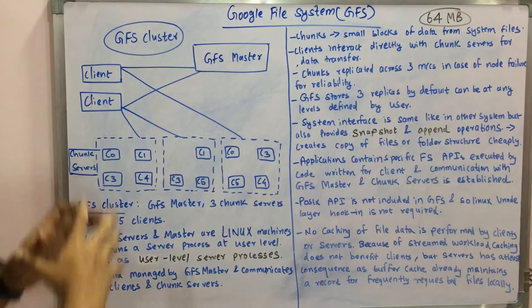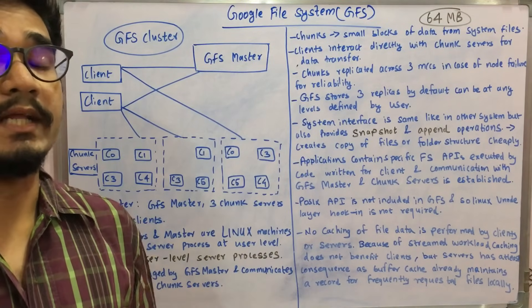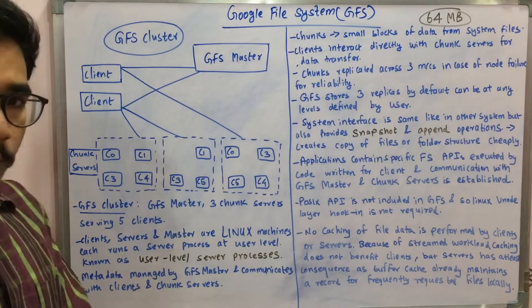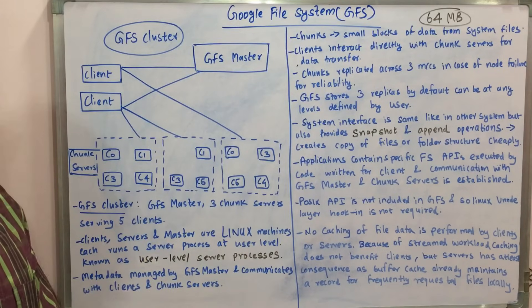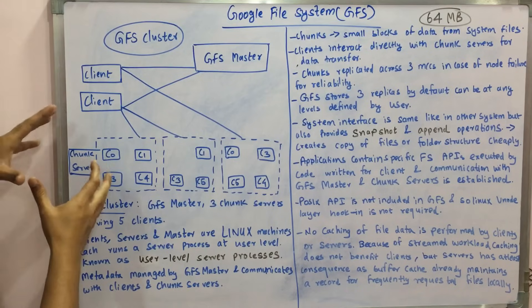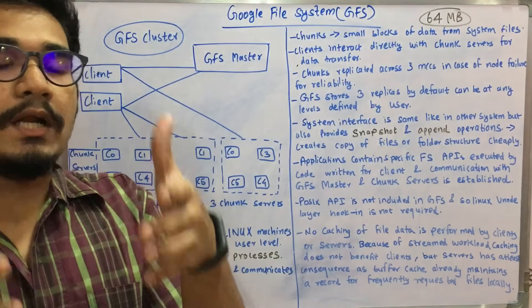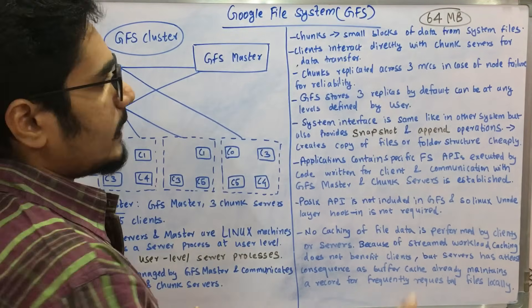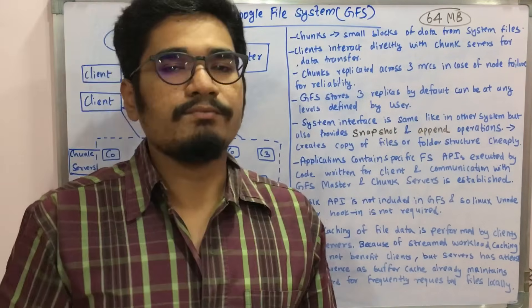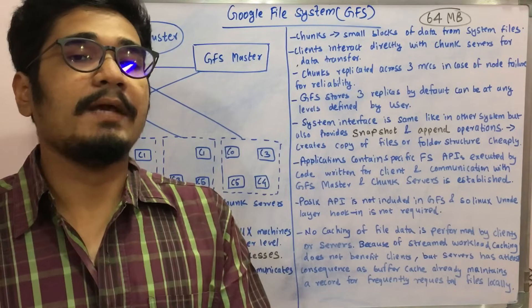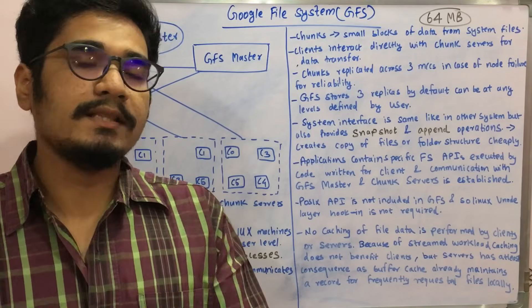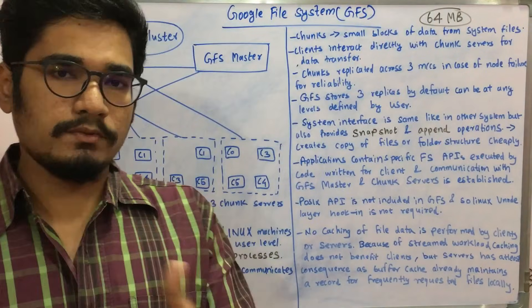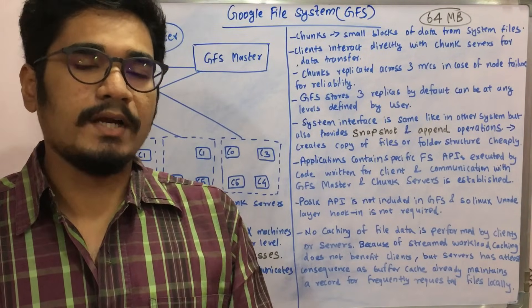In GFS, data about data — metadata — is all managed by the GFS master, and it communicates effectively between the clients and chunk servers. Chunks are small blocks of data obtained from the file system. When files are created or configuration happens, commands are provided at runtime to segregate data into small blocks. These chunks are of a fixed size of 64 MB — an immutable, fixed size.